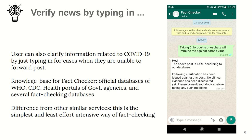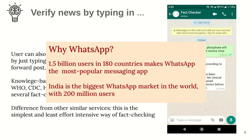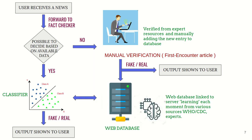One important part of our innovation is its user-friendliness. It's the simplest way to fact-check — you just forward the information and get it verified. We have picked WhatsApp because of its large user base, both globally and in India.